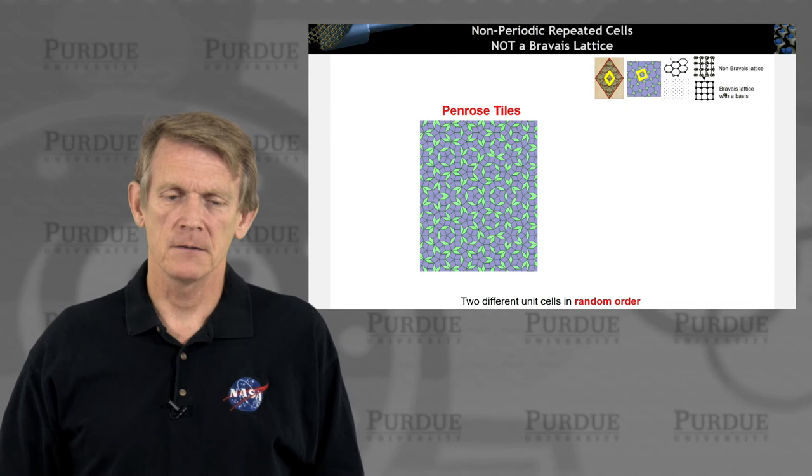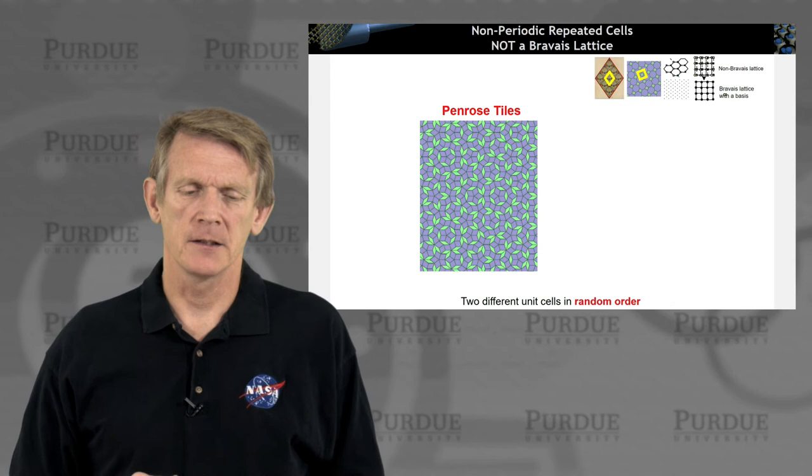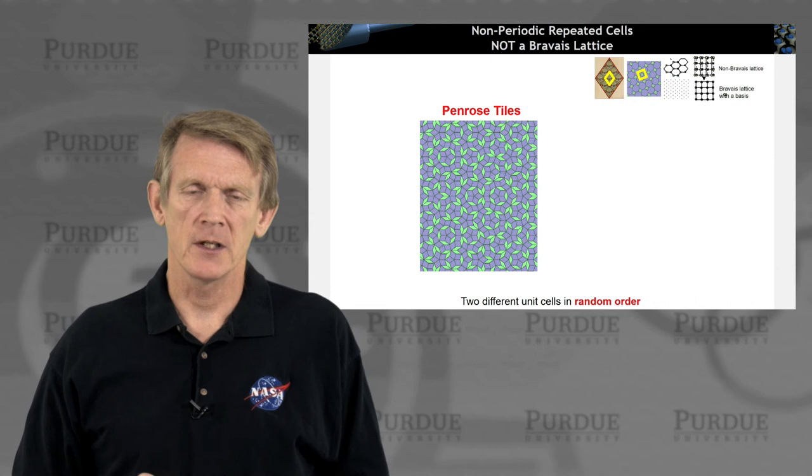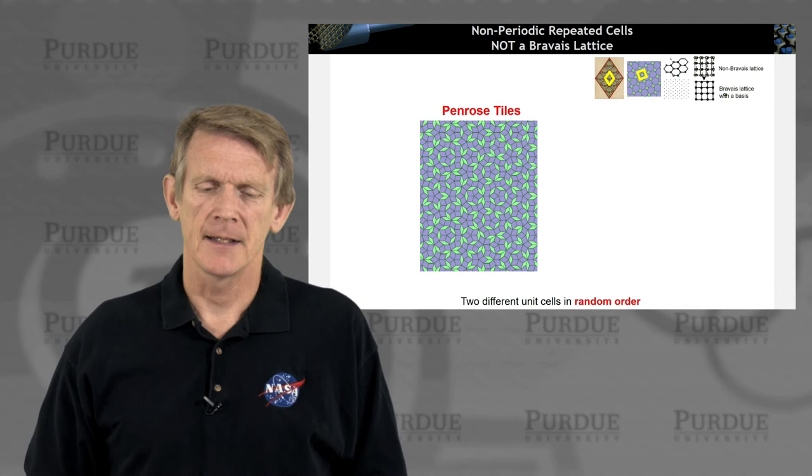Of course, the art here is finite. There's other cells that are non-periodic. They have two different unit cells in them, but these unit cells are in random order. So here's an example of a Penrose tile where you have the blue and the green elements in it. And they are unique and well described, but they don't have a long range order. They have a random order. So that is not a Bravais lattice.